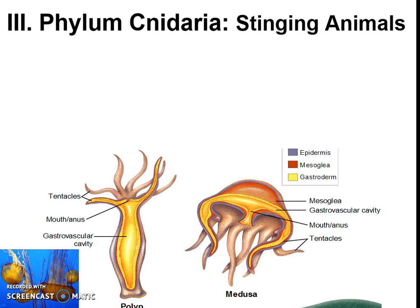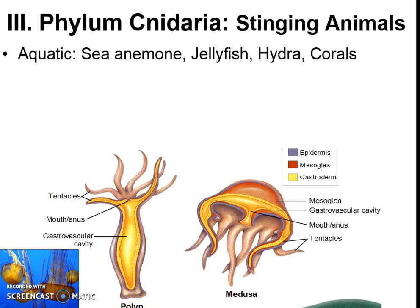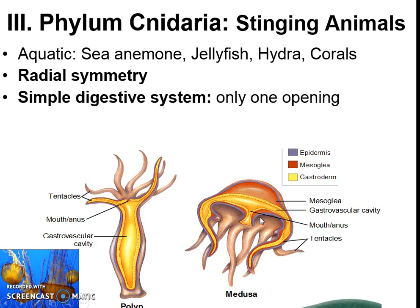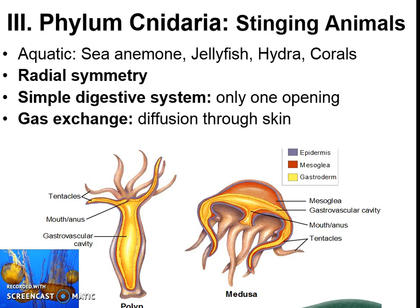Now we're getting to something a little bit more complex: Cnidaria — you don't need to know how to say that — it just means stinging animals. These are aquatic things like jellyfish, corals, etc. They all have stinging tentacles and radial symmetry, so this is our first example of symmetry — a mirror placed in any orientation would show symmetry. There's a digestive system, but it only has one opening. Imagine having your mouth and anus be the same opening — that's because it's so simple. Gas exchange is also really simple, just diffusing through the skin to get oxygen in and CO2 out.